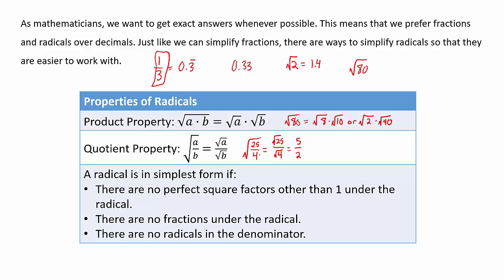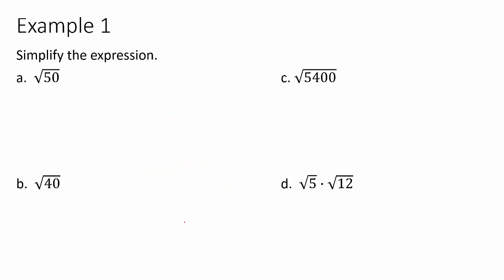The rules for whether a radical is in simplest form are: there should be no perfect square factors other than 1 under the radical, there should be no fractions under the radical, and there should be no radicals in the denominator. We'll use those properties to help with the last two conditions.